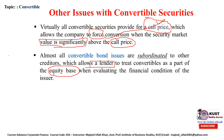If someone is evaluating the balance sheet of a corporation that has issued convertible securities — for example, ACF Limited — when assessing the equity side, they will look at common stock, preferred stock, debt, and convertible securities. These convertible securities are treated as part of the equity base when assessing the financial health of the company.